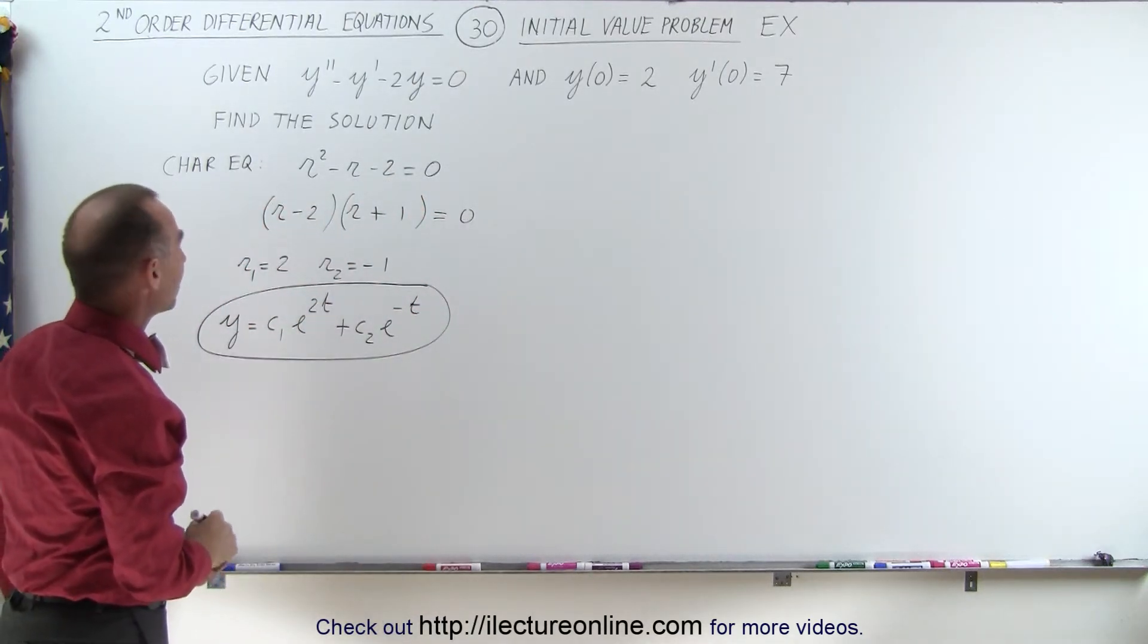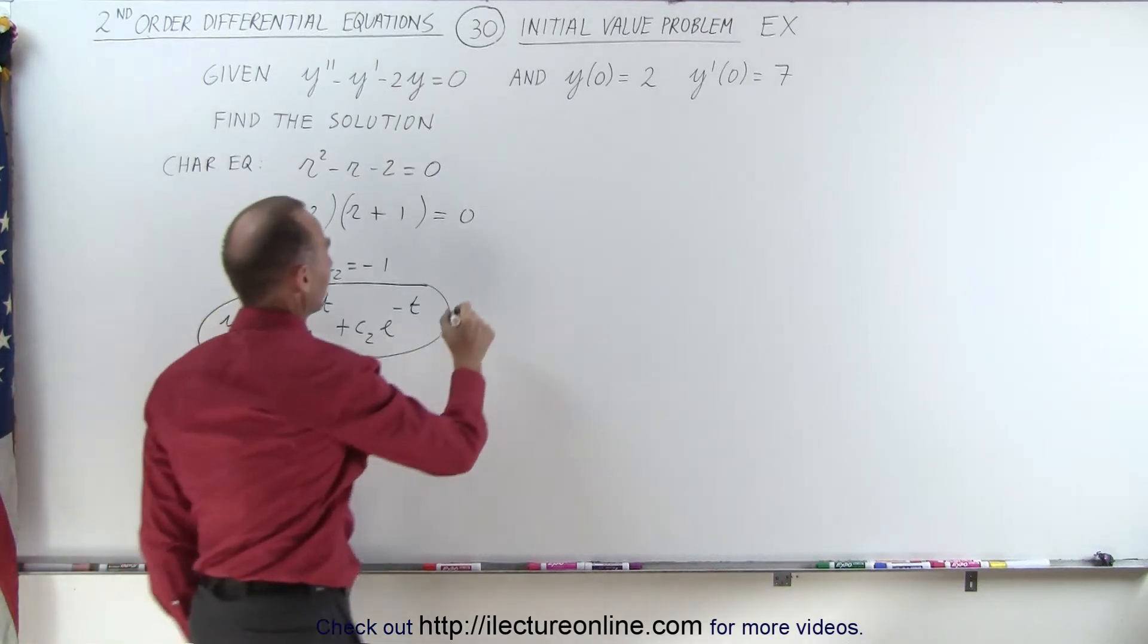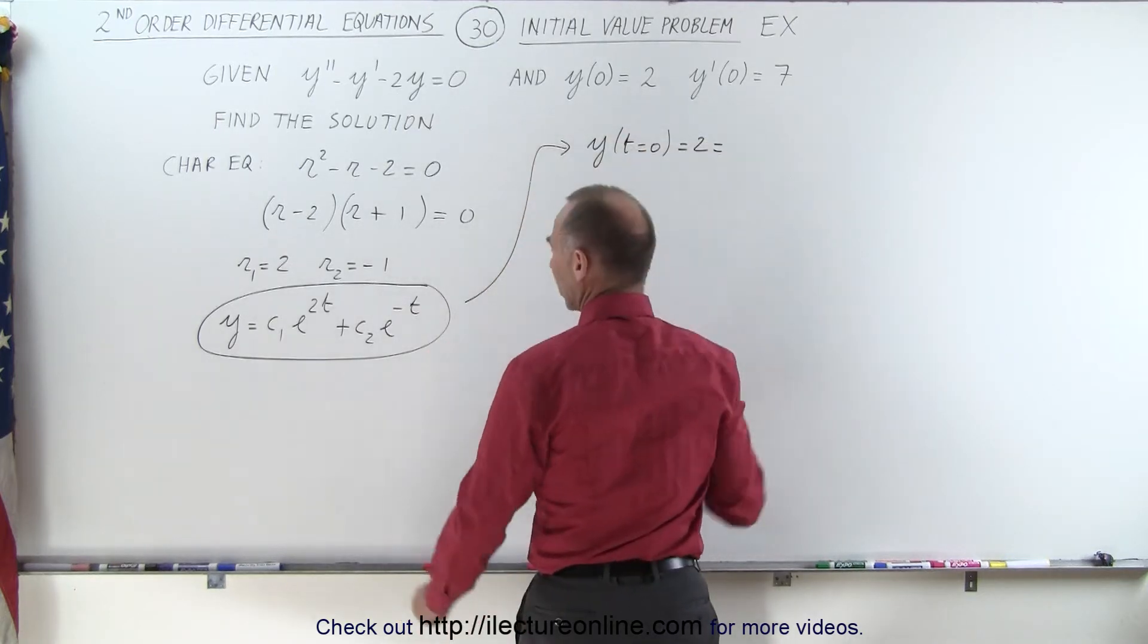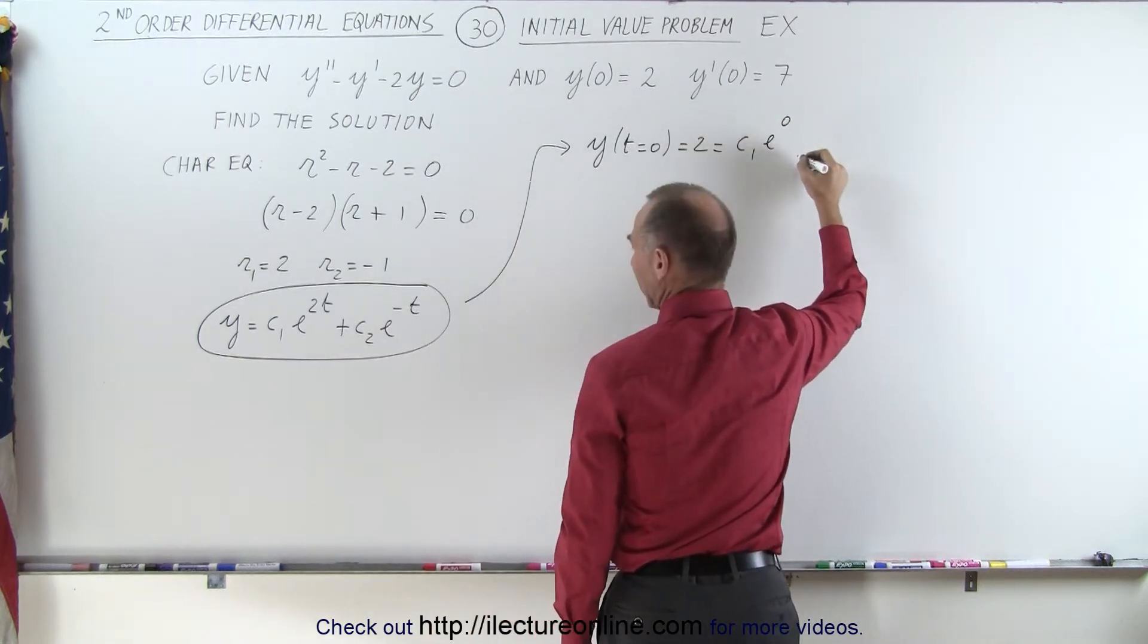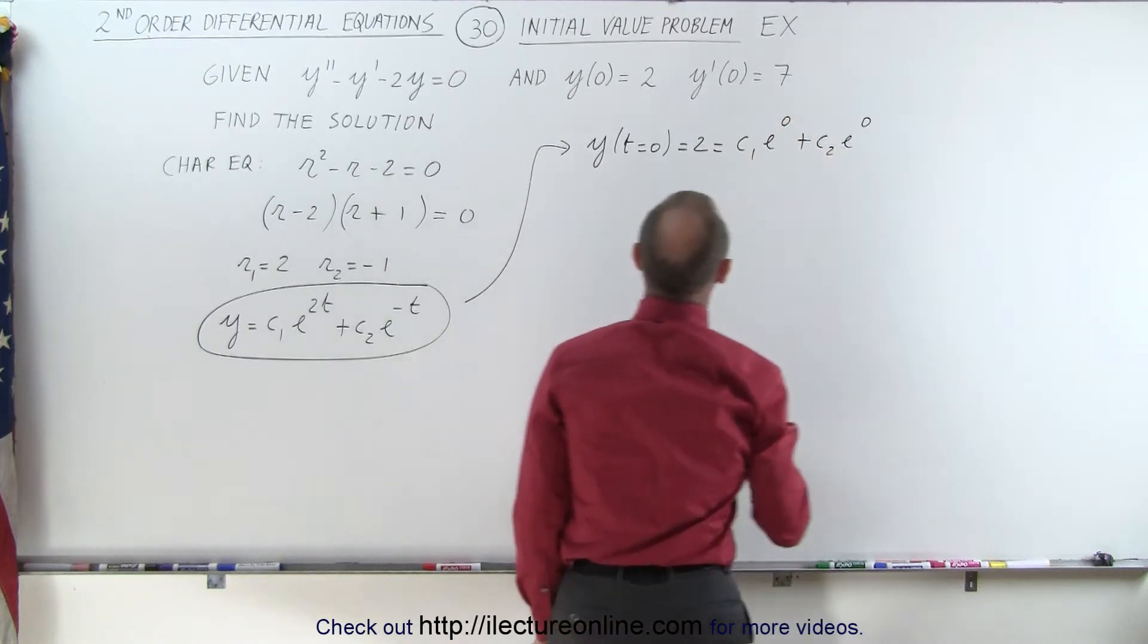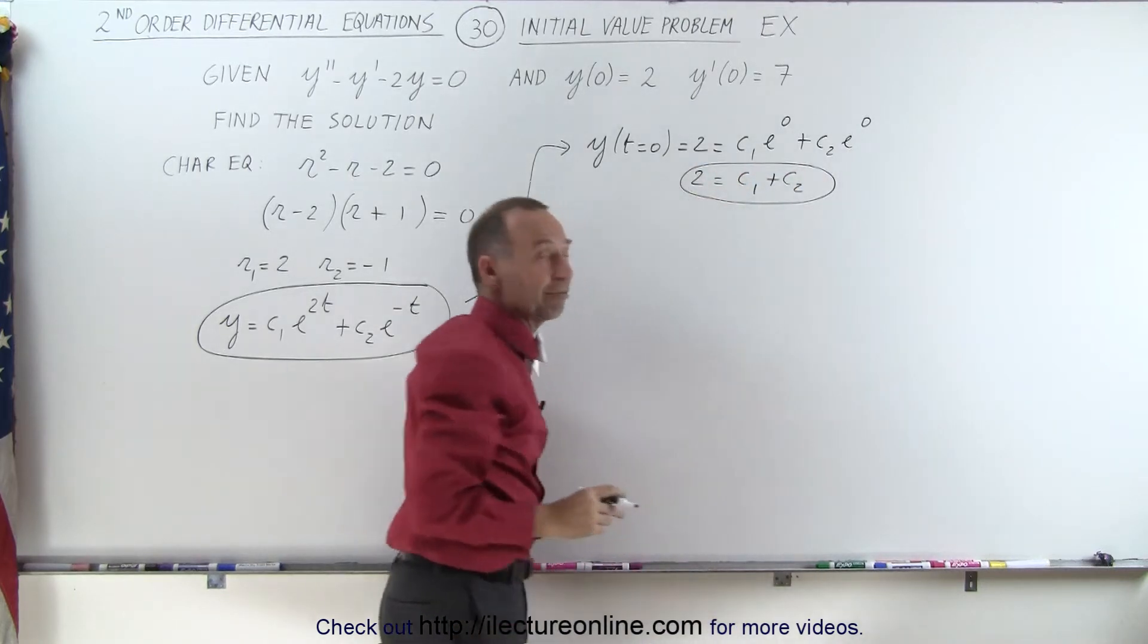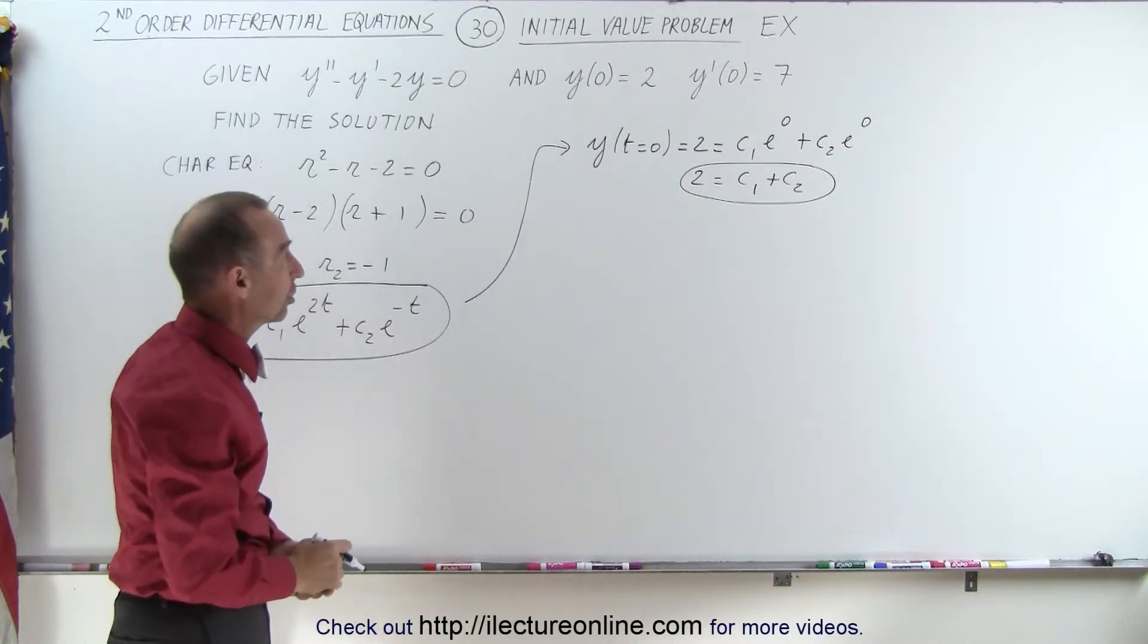So first, we're going to solve for the function when t is equal to zero. So we'll try our first one. So y, when t is equal to zero, is equal to 2. Let's plug in zeros and see what we get. So that gives us c1 e to the zero power plus c2 e to the zero power. In other words, 2 equals c1 plus c2. It gives us our first equation to try and find the two constants. But we need a second equation. That's why we need a second initial condition.